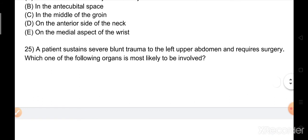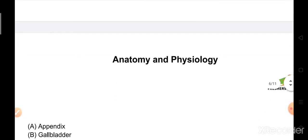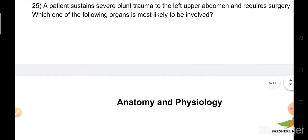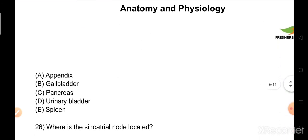Question number 25: A patient sustains severe blunt trauma to the left upper abdomen and requires surgery. Which one of the following organs is most likely to be involved? Options: A) appendix, B) gallbladder, C) pancreas, D) urinary bladder, E) spleen. The right answer is spleen.